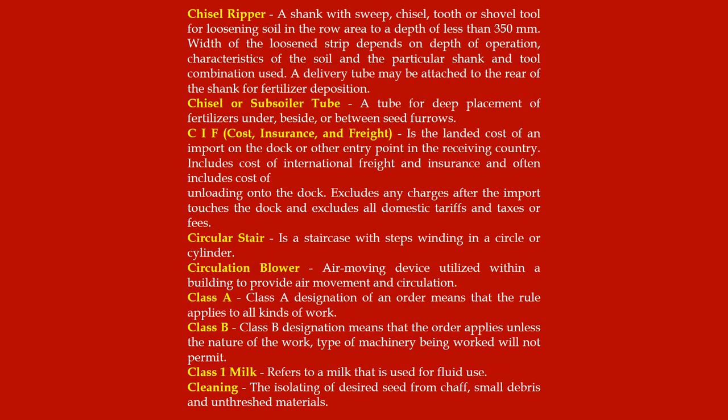Chisel ripper: a shank with sweep, chisel tooth or shovel tool for loosening soil in the row area to a depth of less than 350 millimeters; width of the loosened strip depends on depth of operation, characteristics of the soil and the particular shank and tool combination used; a delivery tube may be attached to the rear of the shank for fertilizer deposition. Chisel or subsoiler tube: a tube for deep placement of fertilizers under, beside or between seed furrows.